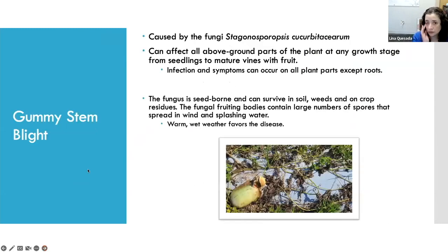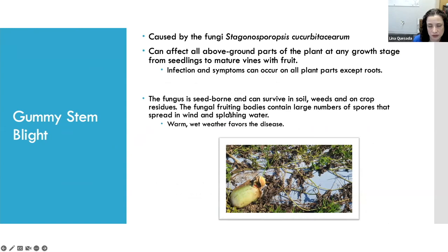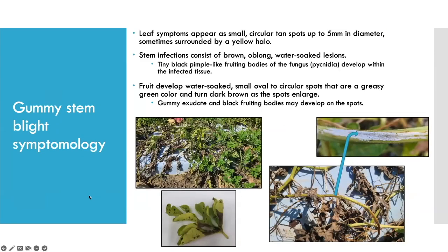Now I'm going to switch to gummy stem blight. Gummy stem blight is caused by the fungus Stagonosporopsis cucurbitacearum — the name has changed, it used to be Didymella something. It affects the entire plant, typically producing very black lesions in the foliage that tend to be at the edges of leaves, and of course it can also have fruit symptoms. The fungus can be seed-borne and can also survive in the soil, in weeds, and in volunteer plants. It prefers warm, wet weather so we see it a little later in the season.